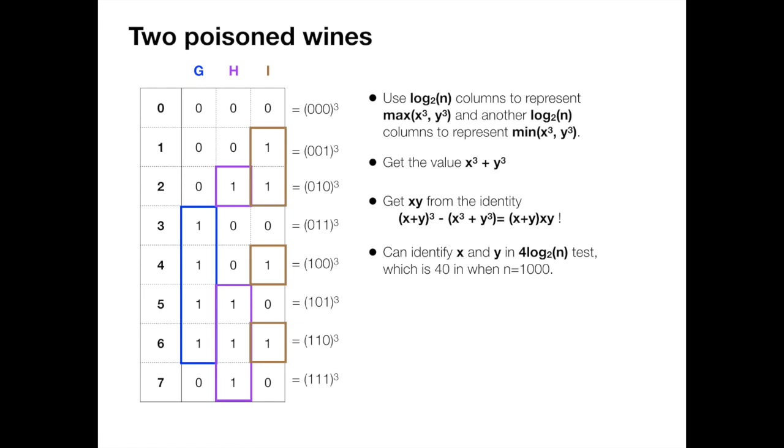So when n equals to eight, this is meaningless because we can just use one drink for each wine and then find out the poison wines in eight tests. But when n gets larger and larger, this becomes much more efficient. For example, when n equals to a thousand, we only need 40 drinks to figure out which two bottles get poisoned.